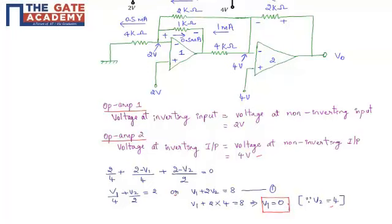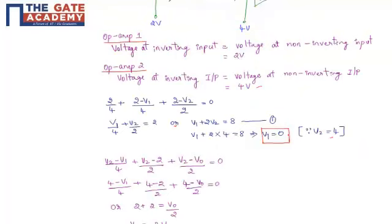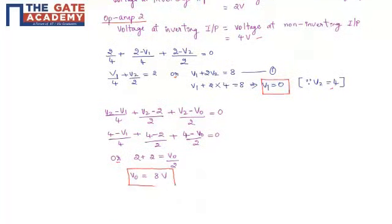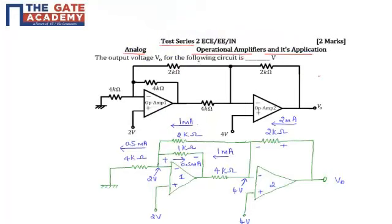For op-amp 2, applying KCL: (V2 − V1)/4 + (V2 − 2)/2 + (V2 − V0)/2 = 0. Substituting V2 = 4 and V1 = 0: (4−0)/4 + (4−2)/2 + (4−V0)/2 = 0. Rearranging gives 2 + 2 = V0/2, hence by simplifying we get V0 = 8 volts.